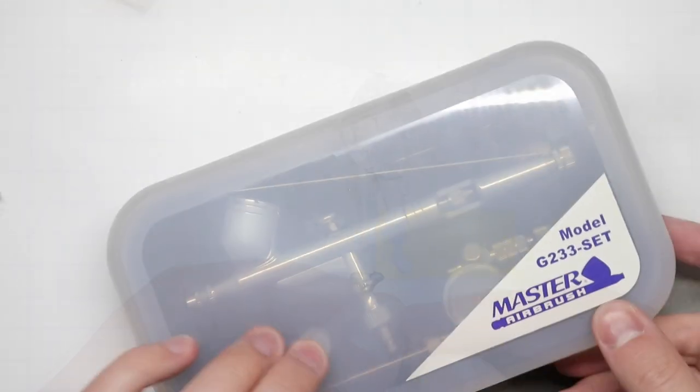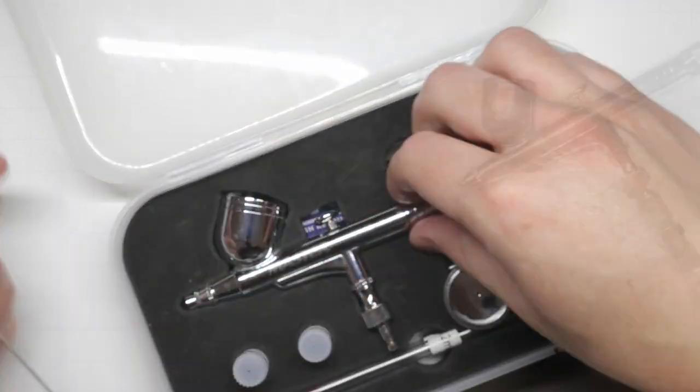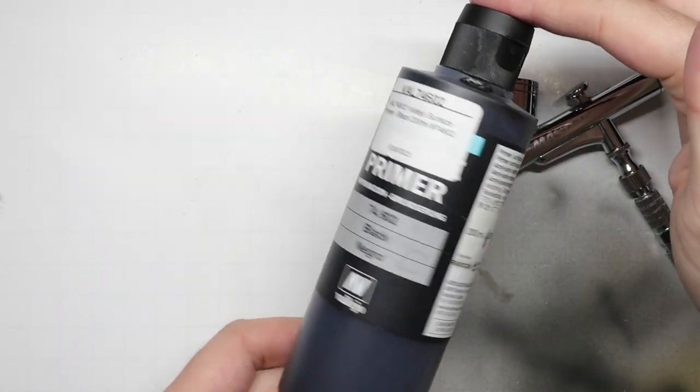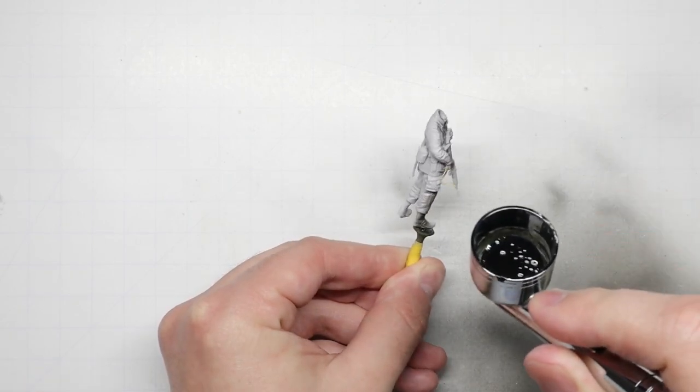With that complete, let's break out our airbrush for a quick primer coat before we move onto the brush painting. I like to prime my figures with flat black to give a nice surface to work on. If you don't have an airbrush, you can achieve this step with a rattle can of spray paint as well.